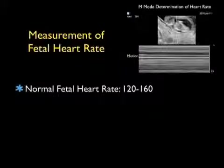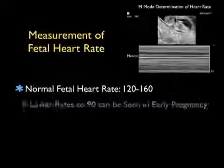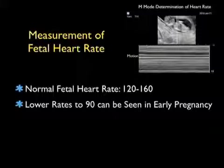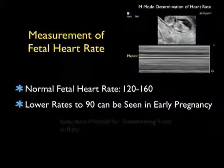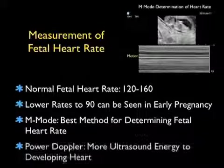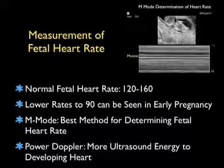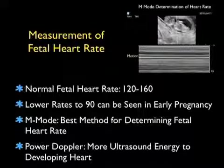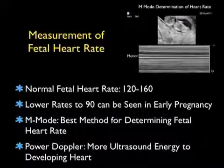In addition to measuring gestational age, another very important concept is to get a measurement of the fetal heart rate. Normal fetal heart rates will range from 120 to 160 beats per minute, but lower rates down to 90 beats per minute can be seen in early pregnancy during the early parts of the first trimester. M mode is the best method for determining fetal heart rate. Power Doppler, in contrast, gives more ultrasonic energy to the developing heart. Thus, M mode is the preferred way of measuring the fetal heart rate.